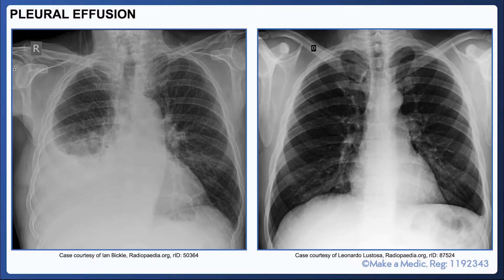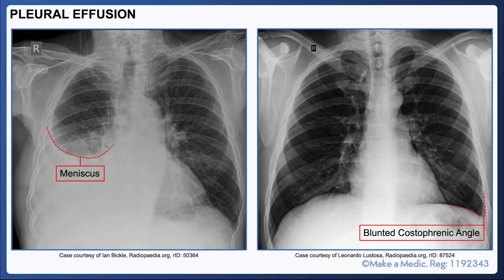Pleural effusions can be pretty obvious if they're large — on the left hand image we can see a clear meniscus — but smaller pleural effusions are much less obvious, which is why it is important to inspect the costophrenic angles. The image on the right at first glance looks relatively normal, but in fact the left costophrenic angle is blunted. It's worth bearing in mind that it takes quite a bit of fluid, around 200 mls or so, for a pleural effusion to actually be visible on the chest X-ray.